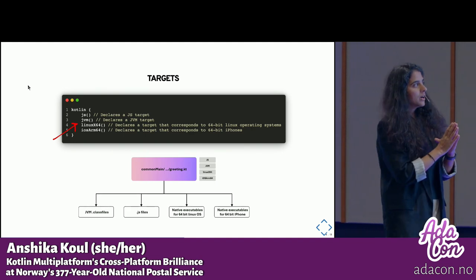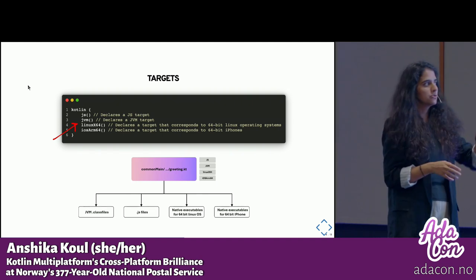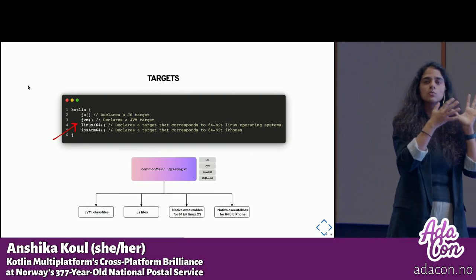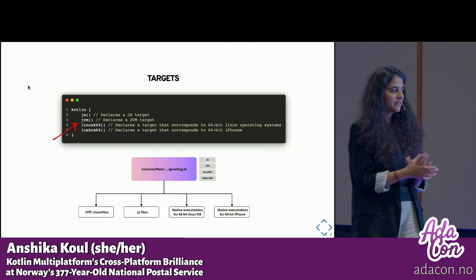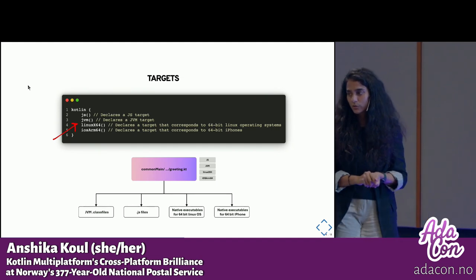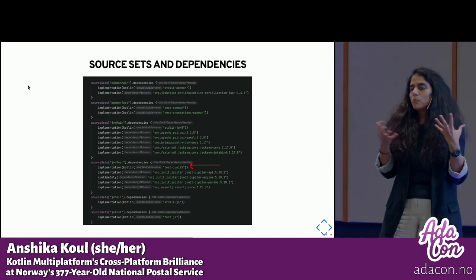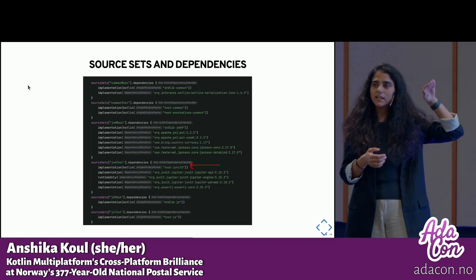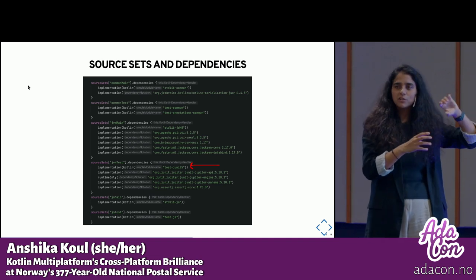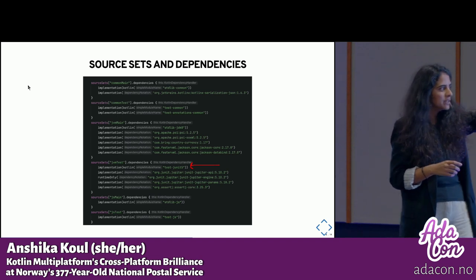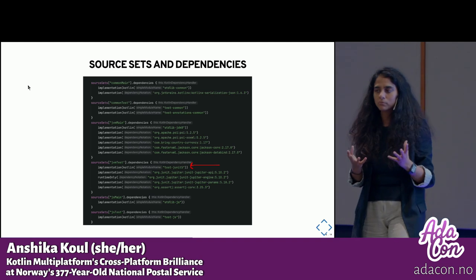Then we have something called targets. This is a developer telling the Kotlin compiler, by writing DSL in the Gradle build script, that these are the targets you want the common code to compile to. When you compile the whole library, you get those executables — JVM class files, or JS files, or native executables for iOS and Android. For Java developers, the analogy here would be your POM file or your Gradle file — it's basically all the modules I talked about with their dependencies. Source set is the keyword where you say, for example, for the JVM common module, these are the dependencies. You can put a JUnit dependency there to write test cases for JVM test. It just has a fancy name.